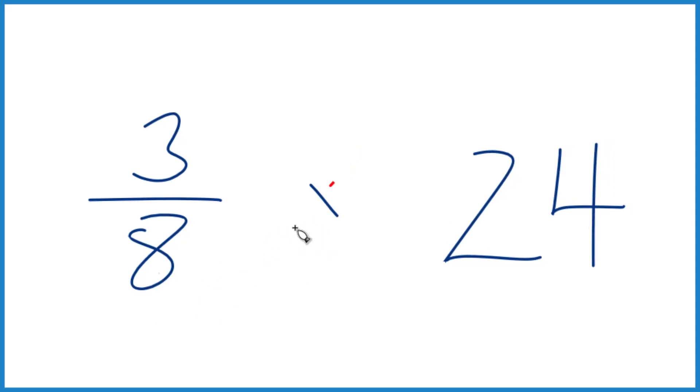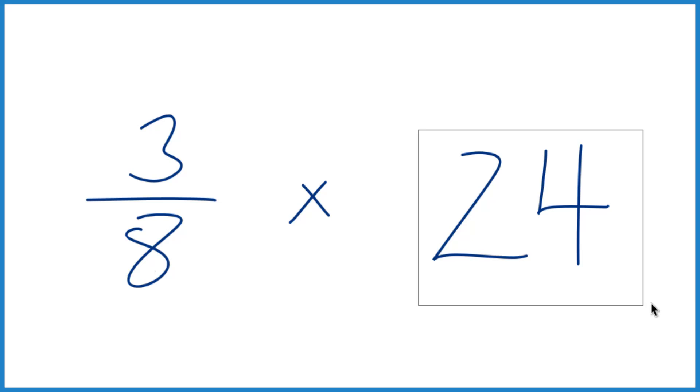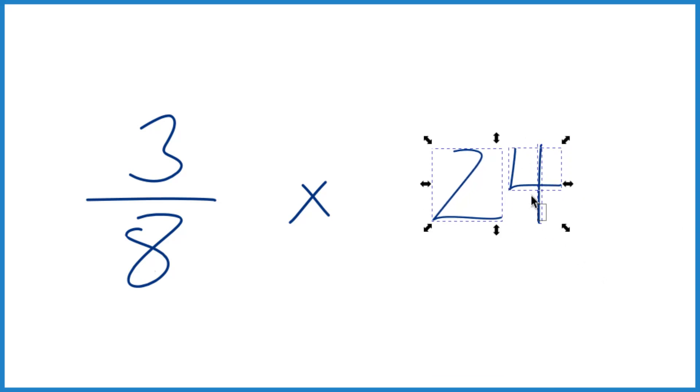Same thing. And then the 24, it's helpful if you take the 24 and shrink it down a little bit. And let's call this 24 over 1. Because 24 divided by 1, it's still 24,